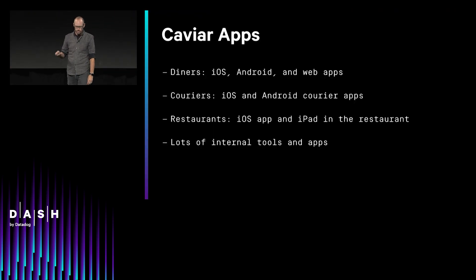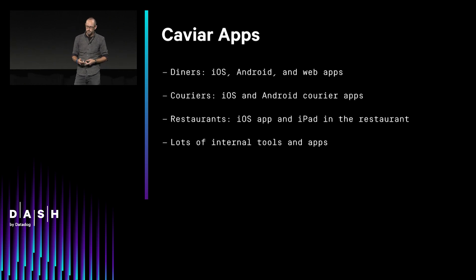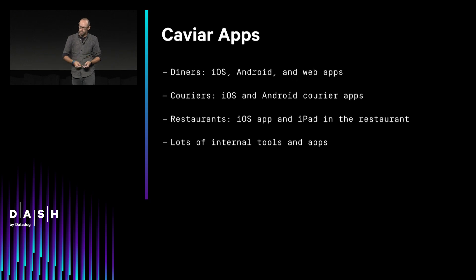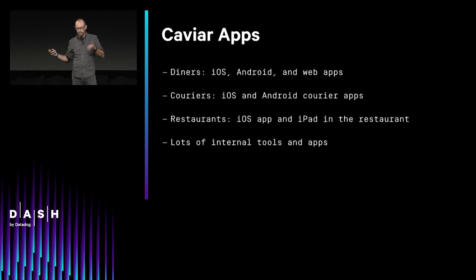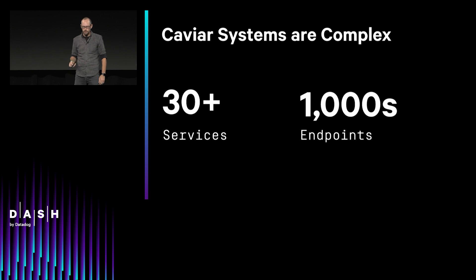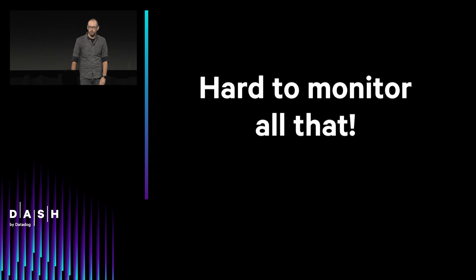The technology behind this is basically an iOS app, an Android app, and a web app for diners to place the order. Couriers have an iOS or Android app that they use to get orders, get to the right restaurant, and get your food to you. And in the restaurant, we have an iPad running an iOS app. And then we have a whole bunch of internal tools helping us manage all of this. Altogether, there are 30-something services and thousands and thousands of endpoints. As you can imagine, it's all pretty hard to monitor — there are a lot of moving pieces.